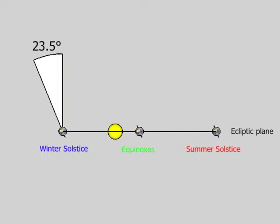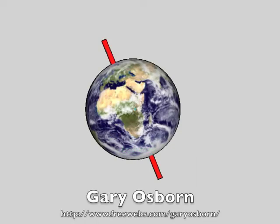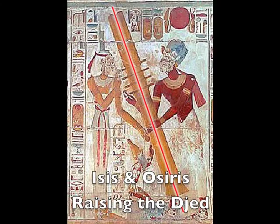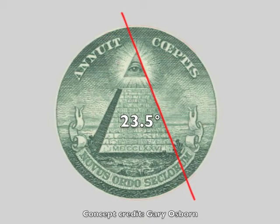The earth's equator is tilted some 23 and a half degrees with respect to the ecliptic. Gary Osborne's fascinating Paradigm Shift website shows how the angle of the earth's tilt is symbolized in art. Here are Isis and Osiris raising the djed, which amazingly matches the angle of the earth's tilt. And here again the 23 and a half degree angle matches the slope of the pyramid on the dollar bill. Osborne has found this same angle symbolized in many other pieces of esoteric art.